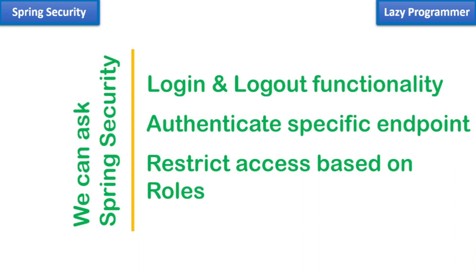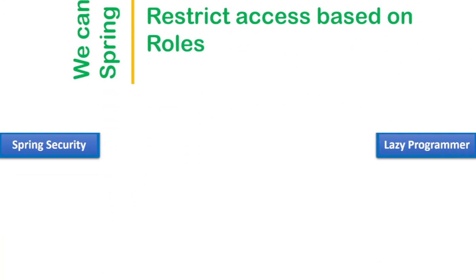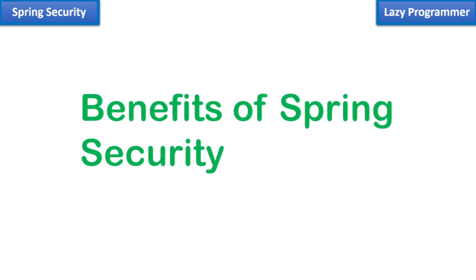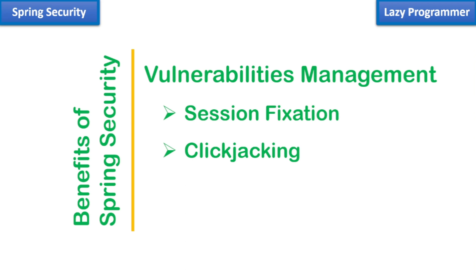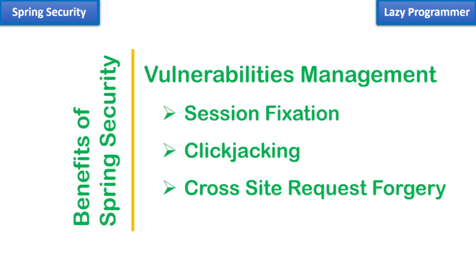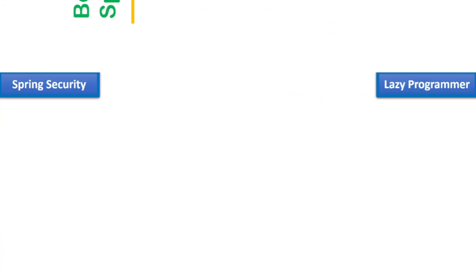Security is needed for all applications, but how it should be implemented differs. Spring Security is flexible and customizable, so it can handle the implementation for almost all applications. One major benefit of Spring Security is handling common vulnerabilities out of the box — just by adding Spring Security to your application, you can handle session fixation, which is an attack that permits an attacker to hijack a valid user session. We also get protection against clickjacking, which fools users into thinking they are clicking on one thing when they are clicking on another, and protection against cross-site request forgery.